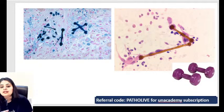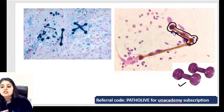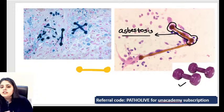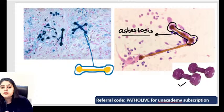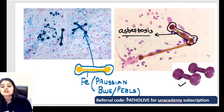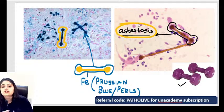The next image is a confidence booster — what you see are dumbbell-shaped structures, which points to an asbestos fiber. When we inhale an asbestos fiber, iron covers it. For iron, we always use the Prussian blue or Pearl stain. You can see the dumbbell-shaped configuration confirmed with Prussian blue — this is a classical case of an asbestos fiber.